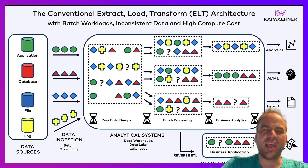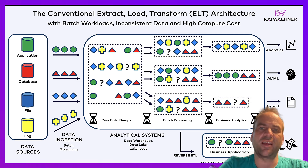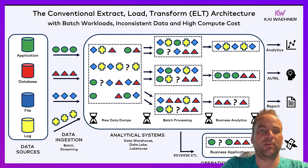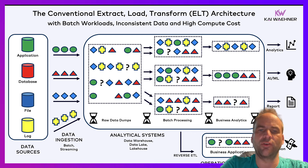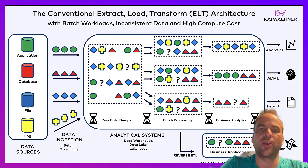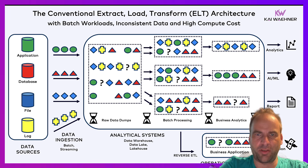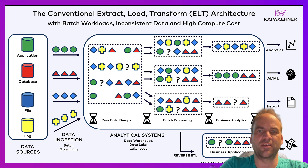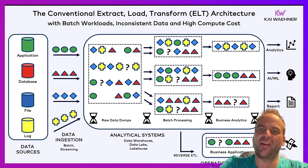The common pattern these days in your favorite data warehouse, data lake, or lakehouse architecture is that you ingest data from the data sources — either with data streaming or on the other side with some batch ETL tools. But then you feed the raw data into your analytical system and process it there again and again for filtering, enrichments, and combination of different data sources. This is not a good idea because your different business units need to process it repeatedly, which is costly and creates inconsistent and often stale data, which is then fed into all these other analytics, AI and ML, or reporting platforms.